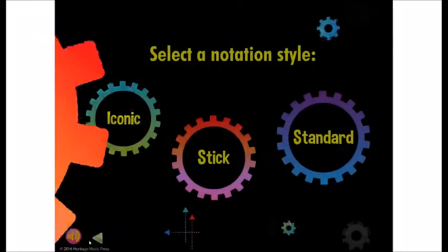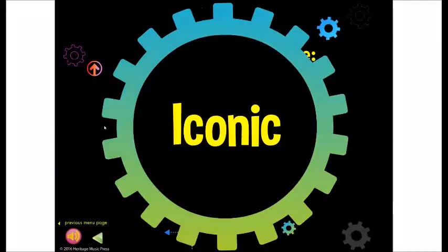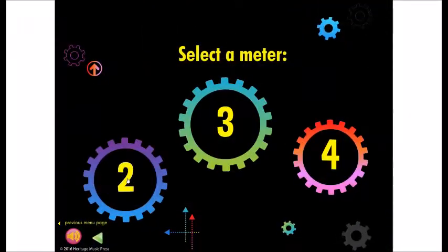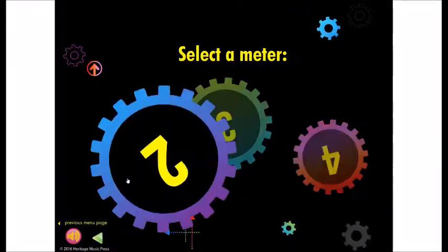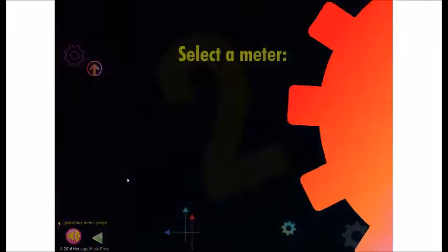Select a notation style first, then pick a meter. Rhythm Writer takes you to a screen where you can explore within the limits you've selected.